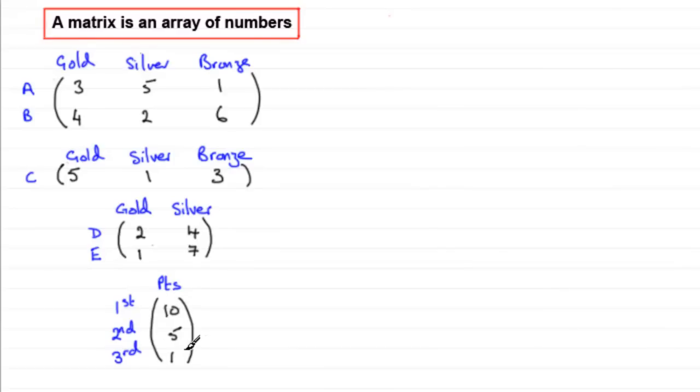We can have matrices which are just one column. This is called a column matrix, and it might represent the points that someone scores if they come first in a race, and five points if you come second, one point if you come third. So you can have arrays of numbers, matrices in other words, representing different things, and they come in different sizes.